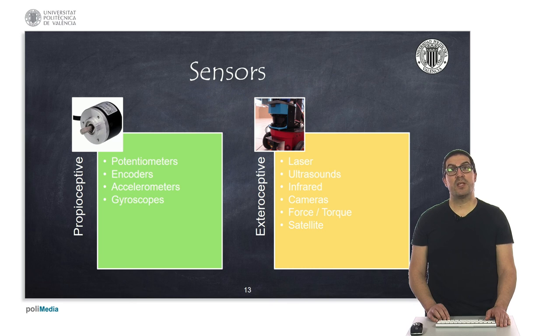Sensors in robotics play a fundamental role because they provide essential information in order to interact with the environment. They can be classified based on their nature, or the variable they can measure. If they measure internal variables of the robot, these sensors are known under the name proprioceptive sensors, which is the case of potentiometers, encoders, accelerometers, among others.